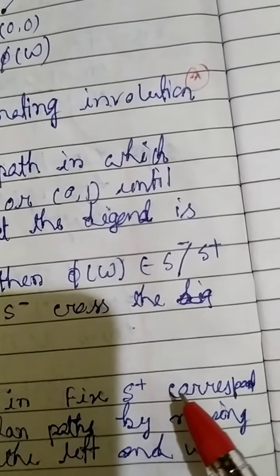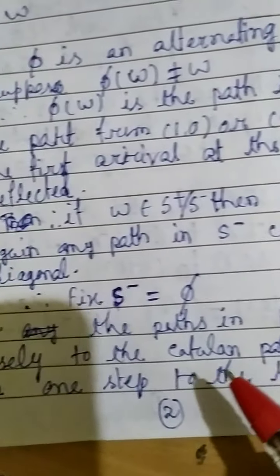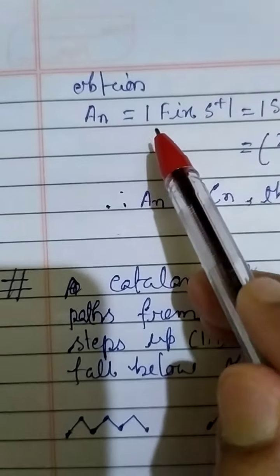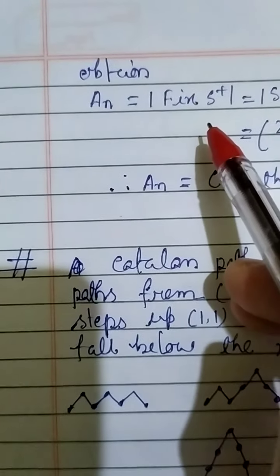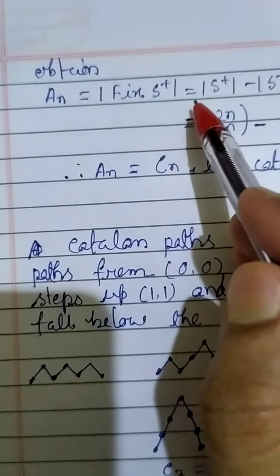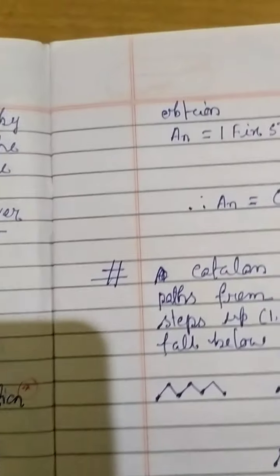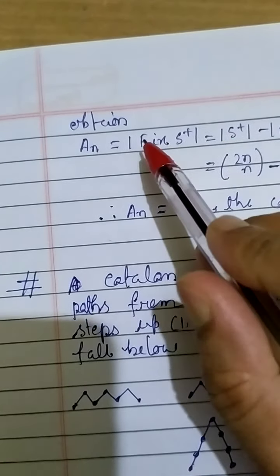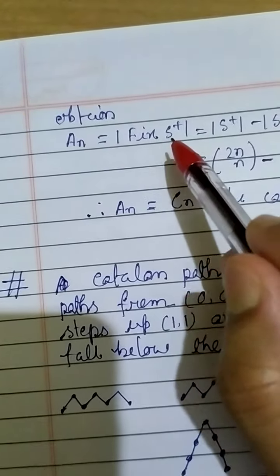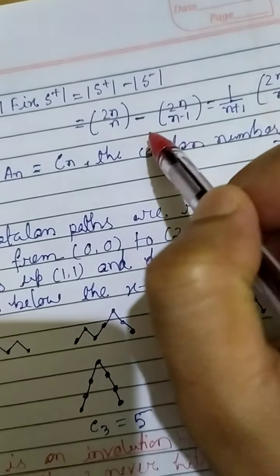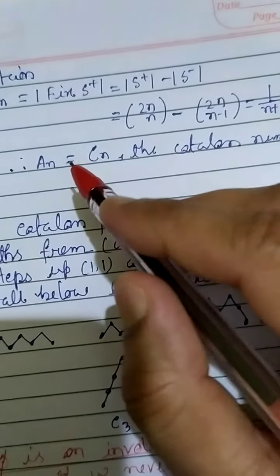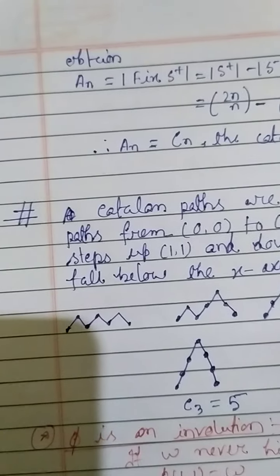The fixed points in S-positive correspond precisely to the Catalan paths, by shifting them one step to the left. So |fix(S-positive)| = Aₙ. Therefore Aₙ = |fix(S-positive)| = |S-positive| - |S-negative| = C(2N,N) - C(2N,N+1), which equals 1/(N+1) · C(2N,N) — the Catalan number. This is the required result.